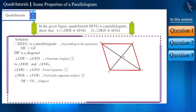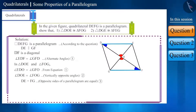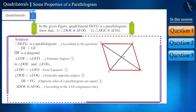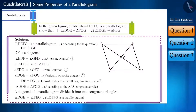In triangles DOE and FOG: angles EDO and GFO are equal, angles DOE and FOG are equal as vertically opposite angles, and opposite sides DE and FG of the parallelogram are equal. With two angles and one non-included side equal, the triangles are congruent by AAS congruence. For triangles DGE and FEG, which are formed by dividing parallelogram DEFG by diagonal GE, a diagonal of a parallelogram divides it into two congruent triangles, so these two triangles are congruent.